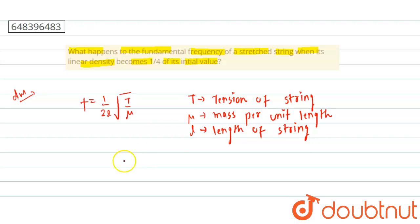Okay, so let me, initial linear density is equals to mu and final linear density